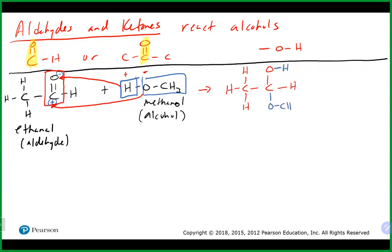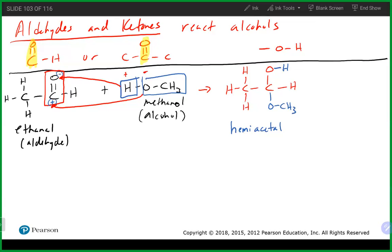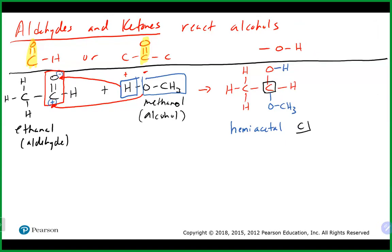When we add one alcohol to an aldehyde we get what is called a hemiacetal. What makes it a hemiacetal: looking at that central carbon, it has a hydrogen, an OH group, and an oxygen-carbon type group attached. Those three things need to be present for it to be a hemiacetal. 'Hemi' means it has the OH group there; 'acetal' because it comes from an aldehyde.